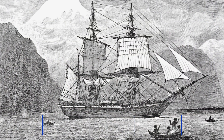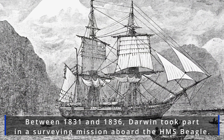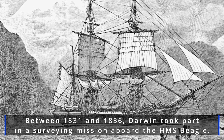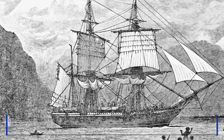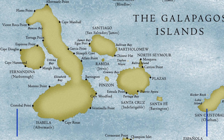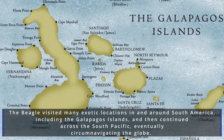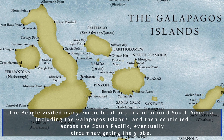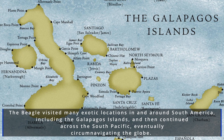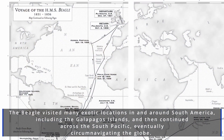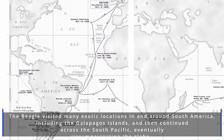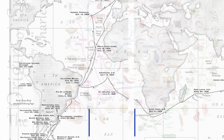Between 1831 and 1836, Darwin took part in a surveying mission aboard the HMS Beagle. The Beagle visited many exotic locations in and around South America, including the Galapagos Islands, and then continued across the South Pacific, eventually circumnavigating the globe.